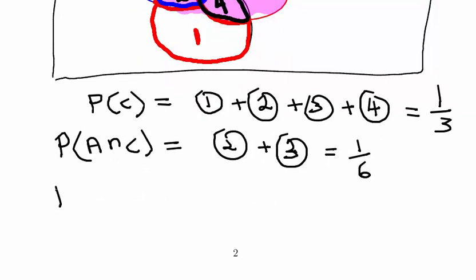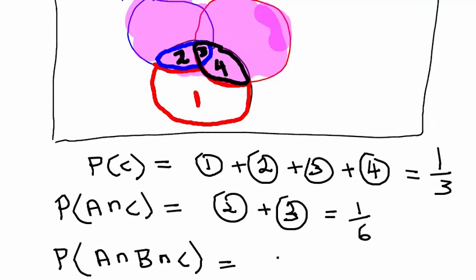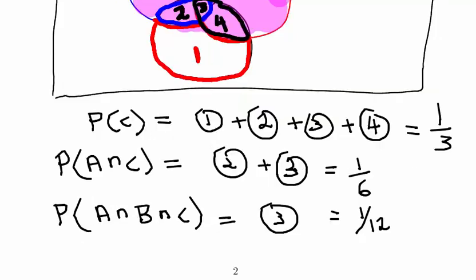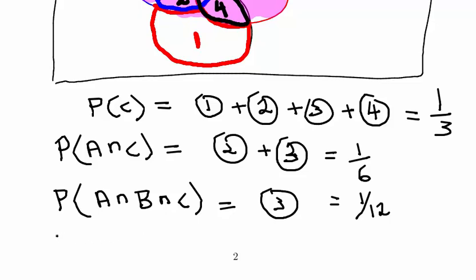We know that 3, the probability of A intersection B intersection C, which in our diagram just above there is the area 3, that is equal to 1 12th. So what does that help?